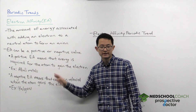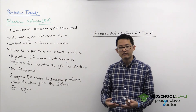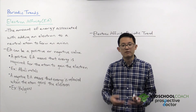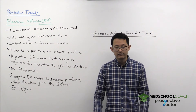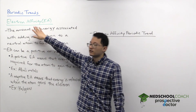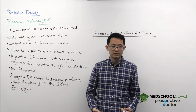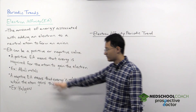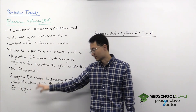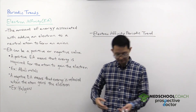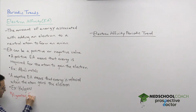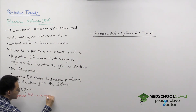Now that we understand what it means to have a positive or negative electron affinity, one thing to be careful about is which one is a larger electron affinity. Is a greater electron affinity a more positive or a more negative value? You can go back to the name — affinity means you like something. If you have a large electron affinity, that means you really like electrons. Clearly halogens like electrons a lot more than alkali metals — they want one more electron to get to noble gas configuration. So a greater electron affinity, a greater EA, is a more negative value.